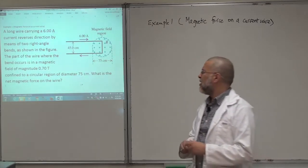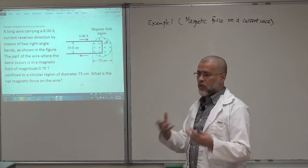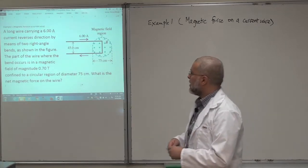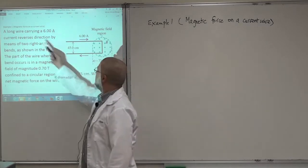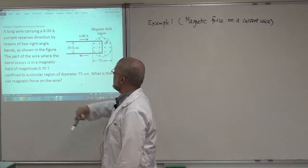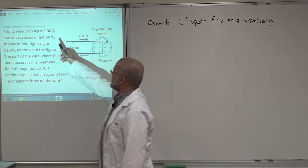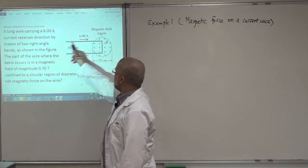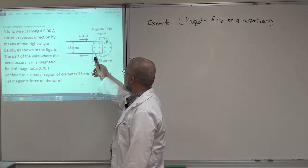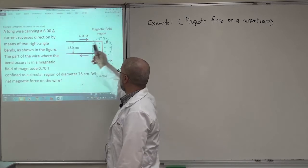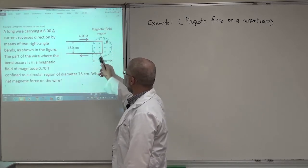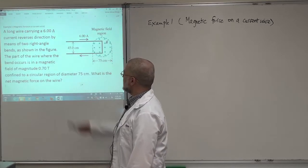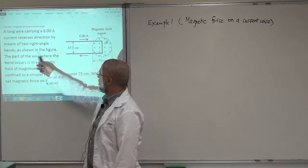I'm just giving you hints here on how to tackle problems related to this concept, but then you have to use your own method to solve the problems. The problem says a long wire, in this shape here, carrying a current of 6 ampere. These two lines are parallel, and then there's this part here, and the current is returning at a right angle.